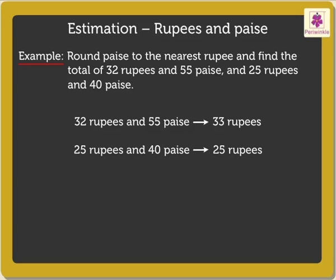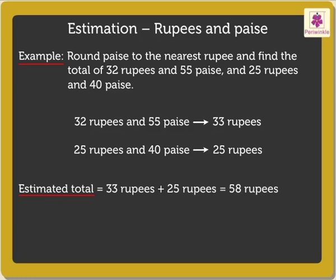Now to get the estimated total, let us add the rupees. Hence, estimated total is equal to 33 rupees plus 25 rupees, which is equal to 58 rupees.